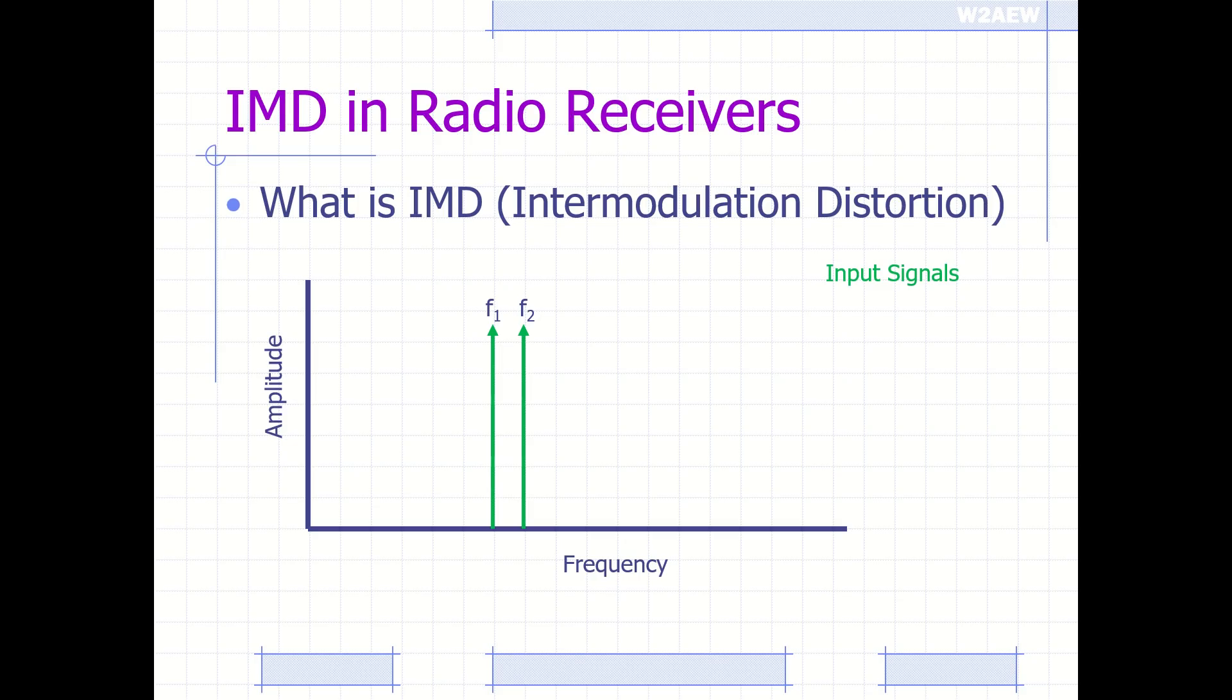Let's take a look at a simple example where I've got two input signals, F1 and F2, being applied into a receiver. Any nonlinearity in that receiver is going to cause these to mix together and create IMD products.